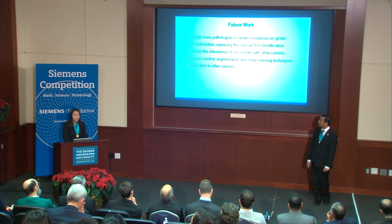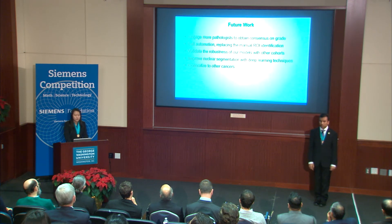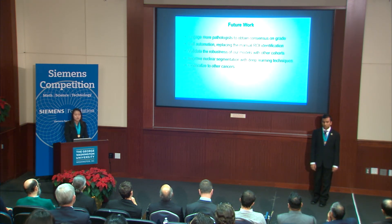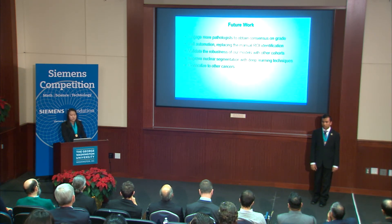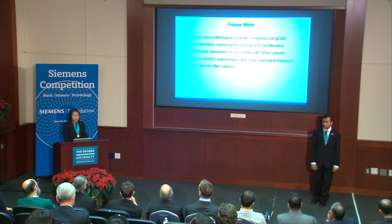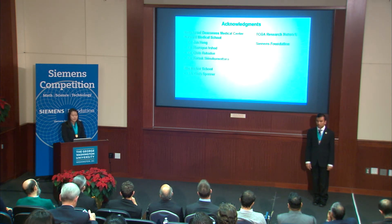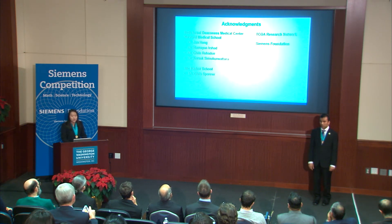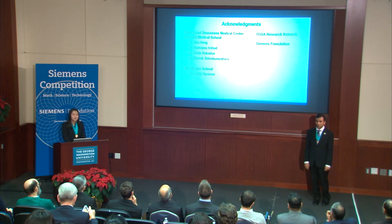In the future, we would like to engage more pathologists to obtain a consensus on grade for the discordant set. We'd also like to fully automate our process by replacing the one manual step, which was ROI identification. We'd also like to validate the robustness of our models on other cohorts and improve nuclear segmentation with deep learning techniques. Finally, we'd like to generalize our pipeline to other types of cancer by training on other datasets. We'd like to acknowledge all the following individuals and organizations, especially our mentor Dr. Jan Hung, for their contributions to our project. Thank you.